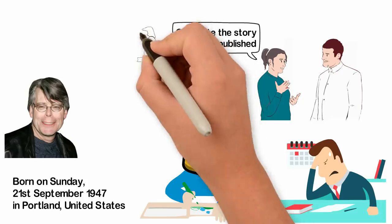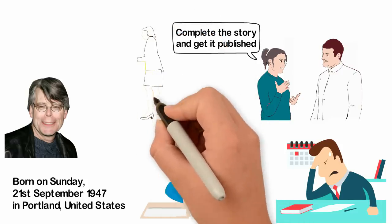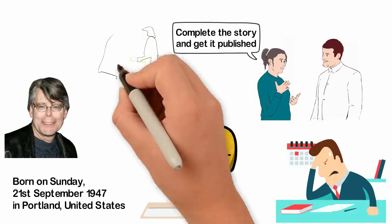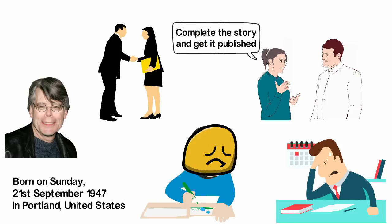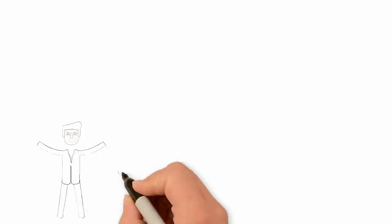By January 1973, King submitted his story to the publisher and a different thing happened. Now he was accepted and his first successful work was published. From that point, Stephen King goes on to become one of the most successful writers the world has ever seen.